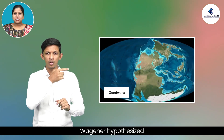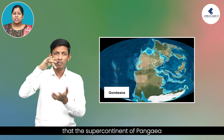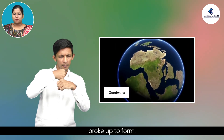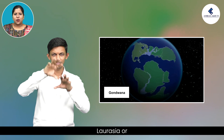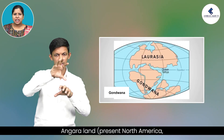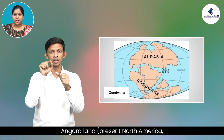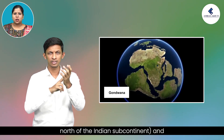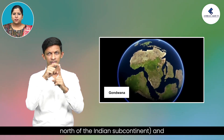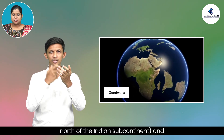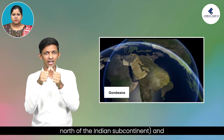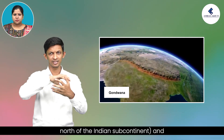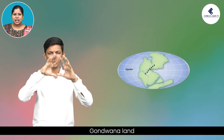Pangaea is the hypothetical continent from which present continents originated by drift during the Mesozoic era to the present. Wegener hypothesized that the supercontinent of Pangaea broke up to form Laurasia, or Angara land, representing present North America, Greenland, and all of Eurasia north of the Indian subcontinent, and Gondwana land.